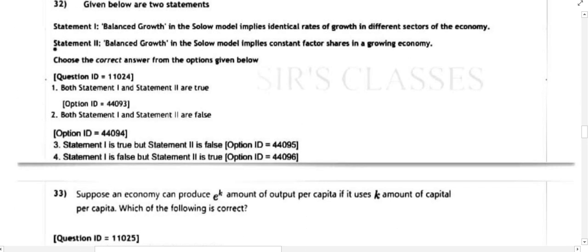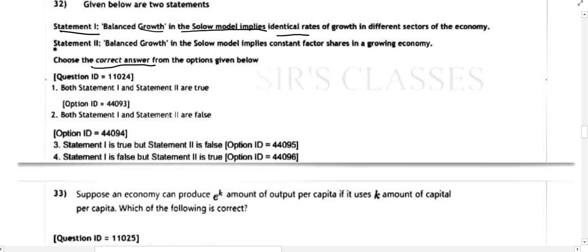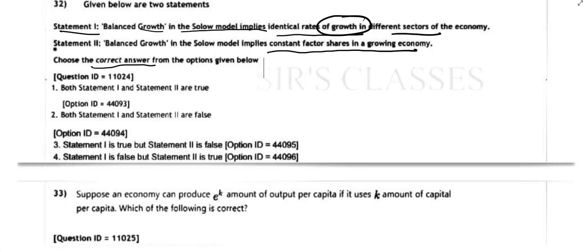Next is question 32. We have two statements and need to choose the correct answer. Statement one: balanced growth in the Solow model implies identical rates of growth. Balanced growth in the Solow model actually implies constant factor shares in the growing economy — this has nothing to do with identical rates of growth.